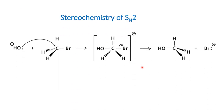First, let us see the stereochemistry of an SN2 reaction. It is a simple reaction wherein the nucleophile attacks from the back side, the leaving group leaves, and the reaction proceeds via a transition state to form the product. If the starting material contains a chiral center, the product obtained will be an inverted product. This is also called Walden's inversion, because the stereochemistry of the starting material and the product will be opposite to each other when the reaction happens at the chiral center.